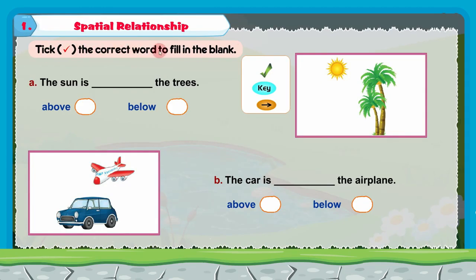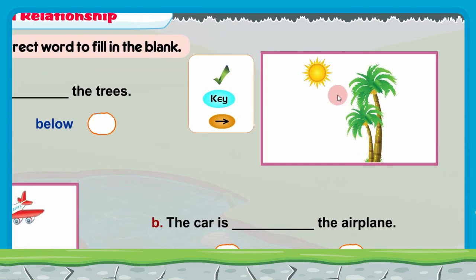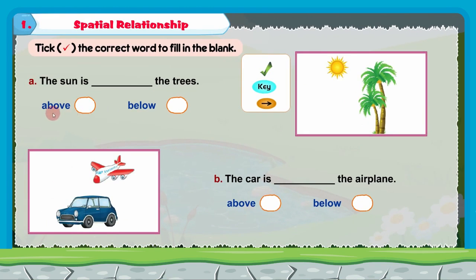Tick the correct word to fill in the blank. We have incomplete statements and we have to write the correct word. First: the sun is dash the trees. If you look at the picture, we have trees and the sun — the sun is above the trees. We have two options: above and below. The correct option is above. So we tick above. The sun is above the trees.